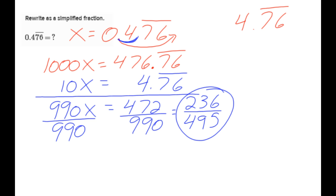So again, what did we do? We multiplied by a thousand, and then we multiplied by 10, and we subtracted those. The reason why we multiplied by a thousand and ten is so we can set up the problem so the repeating decimal cancels, disappears.